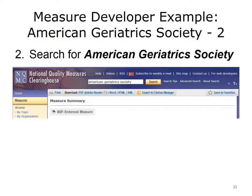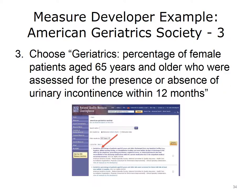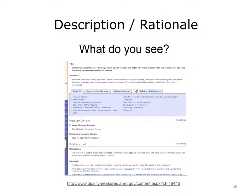Look for the item titled 'Geriatrics: percentage of female patients aged 65 years and older who were assessed for the presence or absence of urinary incontinence within 12 months.' This looks at whether female patients over 65 were assessed for involuntary urine loss or urinary incontinence. Is this a good measure? Look at the rationale and evidence — sometimes it requires additional reading to understand the purpose of the measure in healthcare.